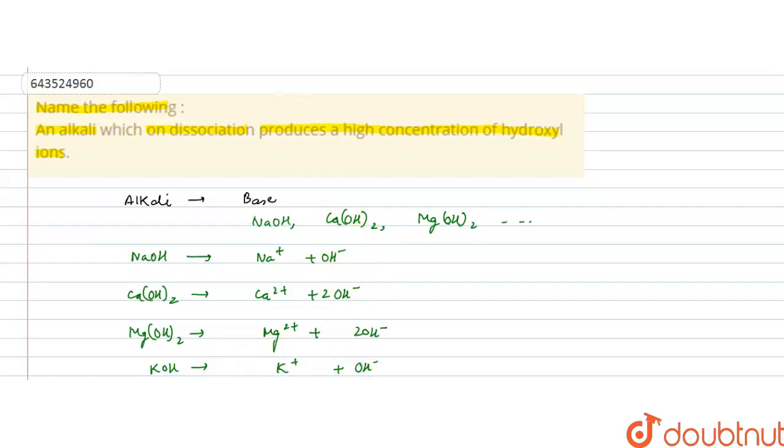So all these will produce high concentration of OH minus ions because all these are alkali or bases. So they produce high concentration of hydroxyl ions. These can be sodium hydroxide, calcium hydroxide, magnesium hydroxide, potassium hydroxide etc. So these are the alkalis.